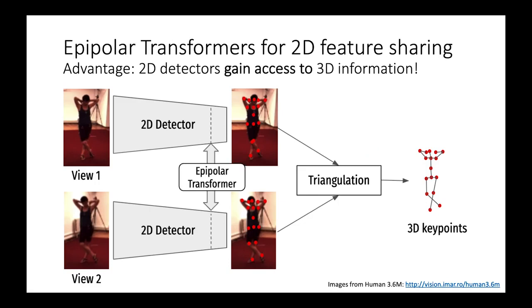We present epipolar transformers to enable 2D detectors to gain 3D information by leveraging neighboring view's intermediate features.